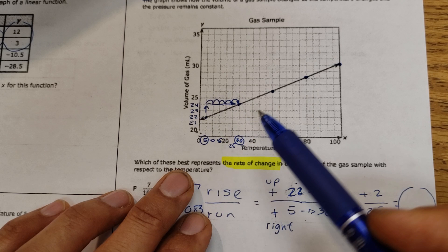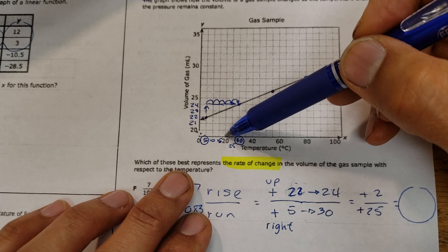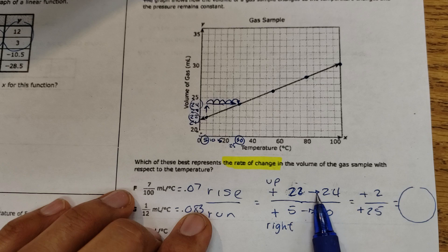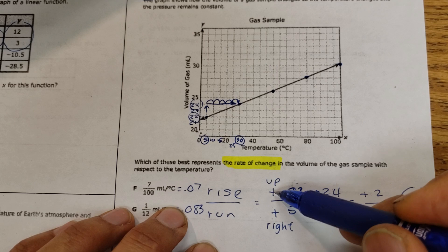20, 21, 22, 23, 24, 25. And then 5, 10, 15, 20, 25, 30, 35, 40. They're going by 5s. So your rise, you're going from 22 to 24. You can put it right here. From 22 to 24 is 2. That's your rise. Up is rise.